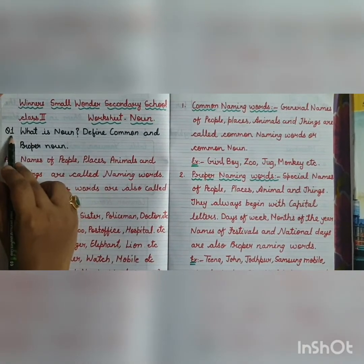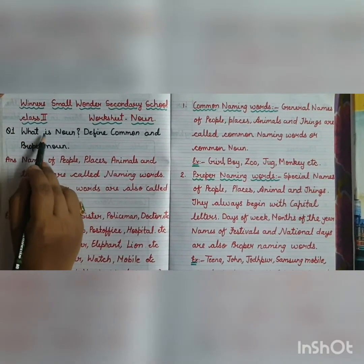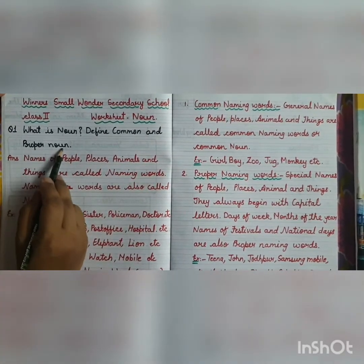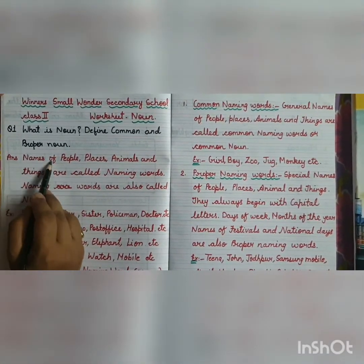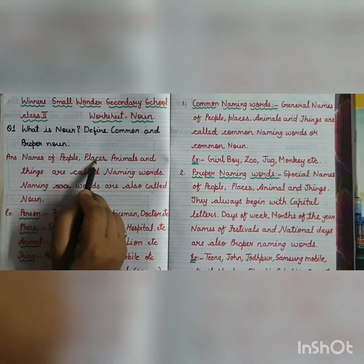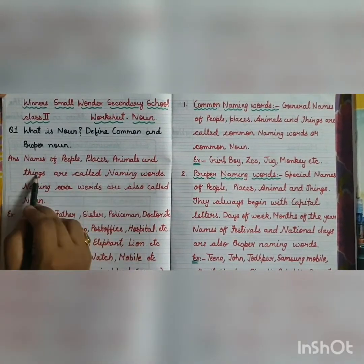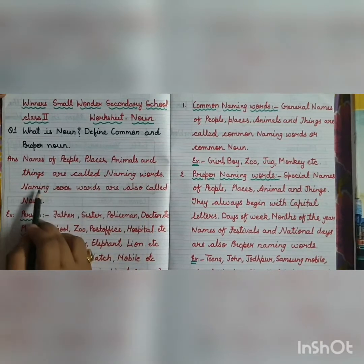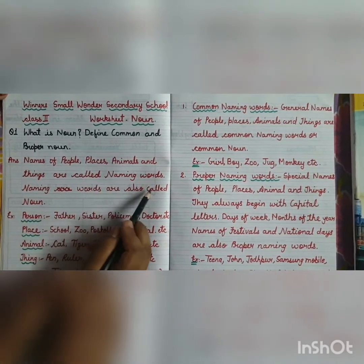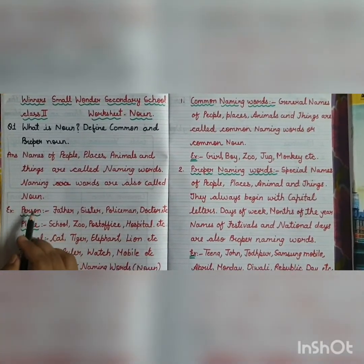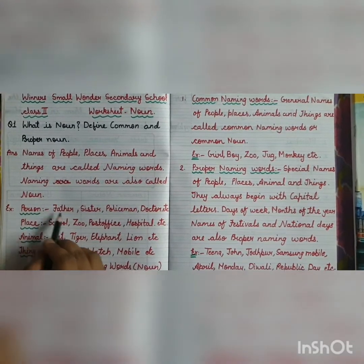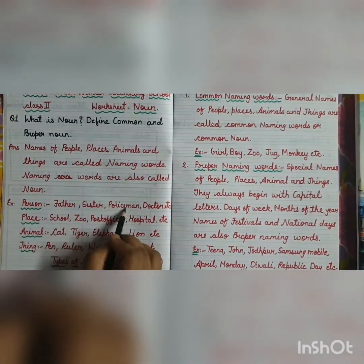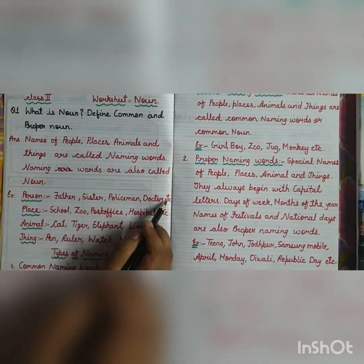Question number 1 is: what is noun? Define common and proper noun. Names of people, places, animals and things are called naming words. Naming words are also called noun. Example of person: father, sister, policeman, doctor, etc.